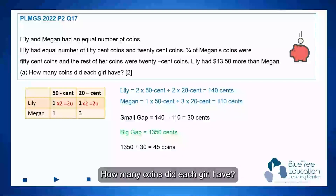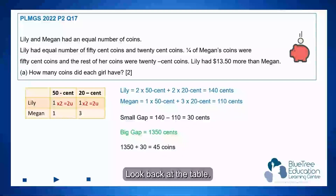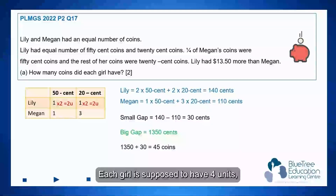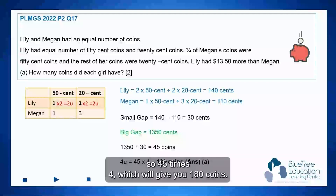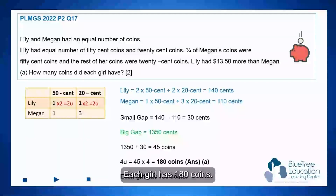How many coins did each girl have? Look back at the table — each girl is supposed to have four units. So 45 times four gives you 180 coins. Each girl has 180 coins.